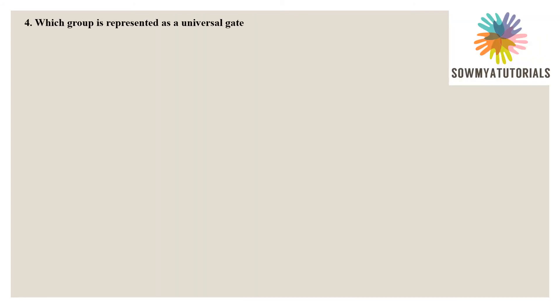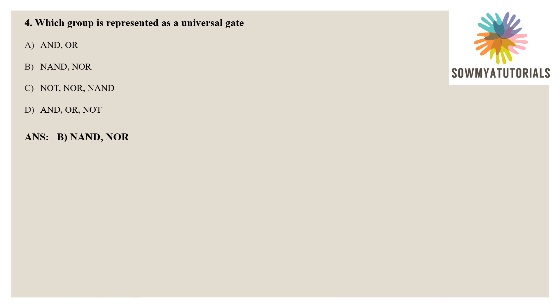Next question: which group is represented as a universal gate? Options: AND and OR; NAND and NOR; NOR and NAND; AND OR and NOR. The correct answer is option B, NAND and NOR.